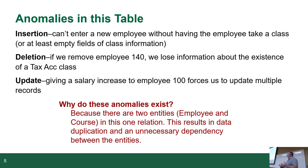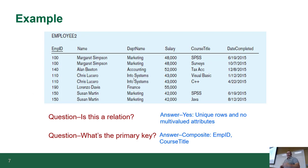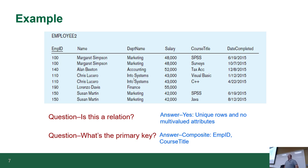The anomalies in this table: essentially, we cannot add a new employee to this table unless they've taken a course, because the course is part of the primary key. When a prof gets hired at Algonquin, we have a big pile of courses we're required to take — Brightspace, plagiarism, WHMIS, that kind of stuff. But we don't come in with courses already assigned. That's an insertion anomaly — you cannot add an employee without the fact that they've had a course.